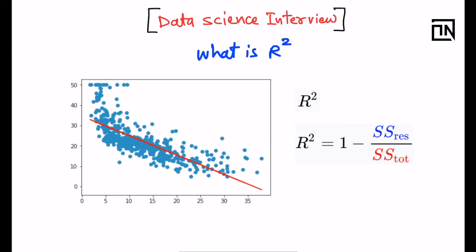First things first, R squared is not a measure of accuracy. This is not accuracy. When I say accuracy, what predictive models am I talking about? I'm talking about regression models, because this is where R squared value is computed.